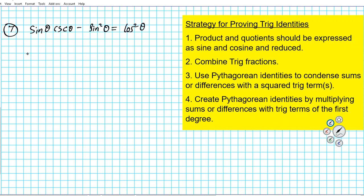Let's go ahead and carry out the proof. Remember the ultimate goal here is to show that the left hand side of the equation is equal to the right hand side. If we can accomplish that then we have been able to show that the identity is in fact true.